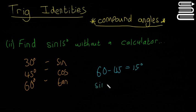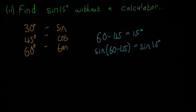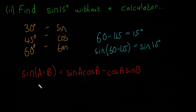That means that sine of 60 minus 45 is equal to sine of 15. Now we have to find sine of 60 minus 45, which is easier because we have the compound angle formula.